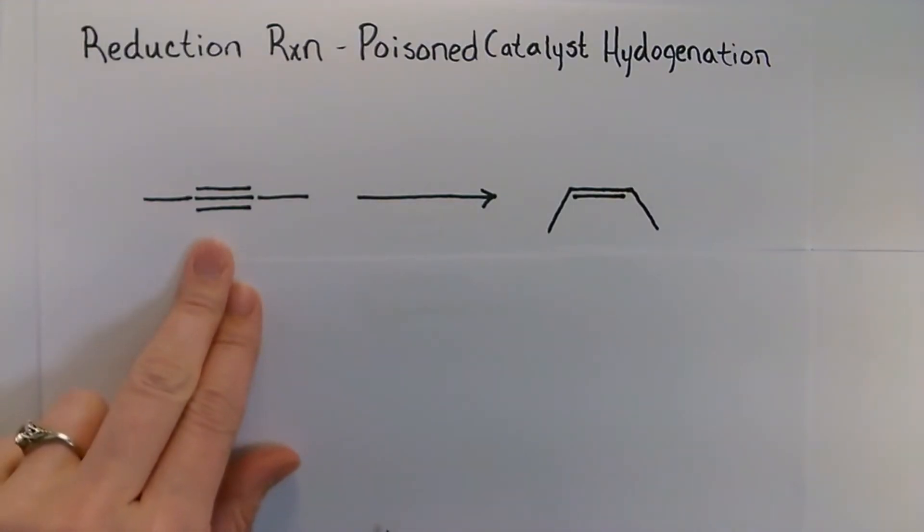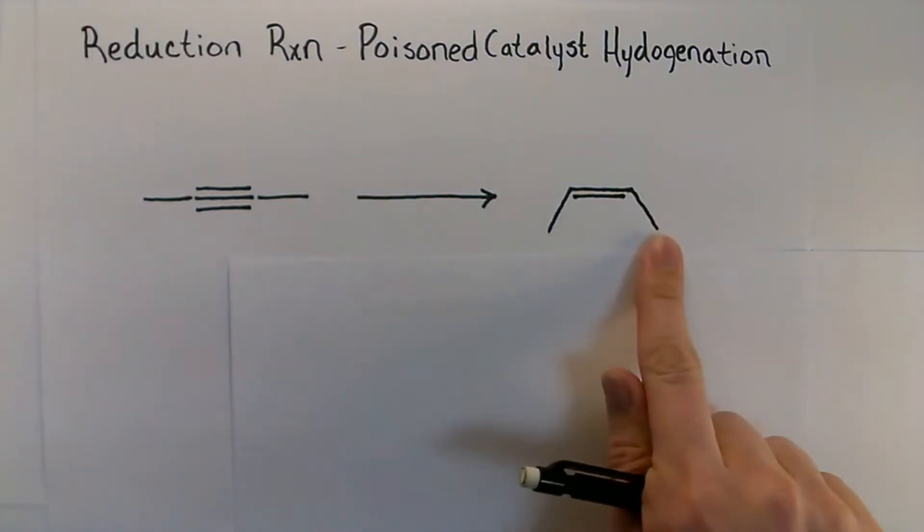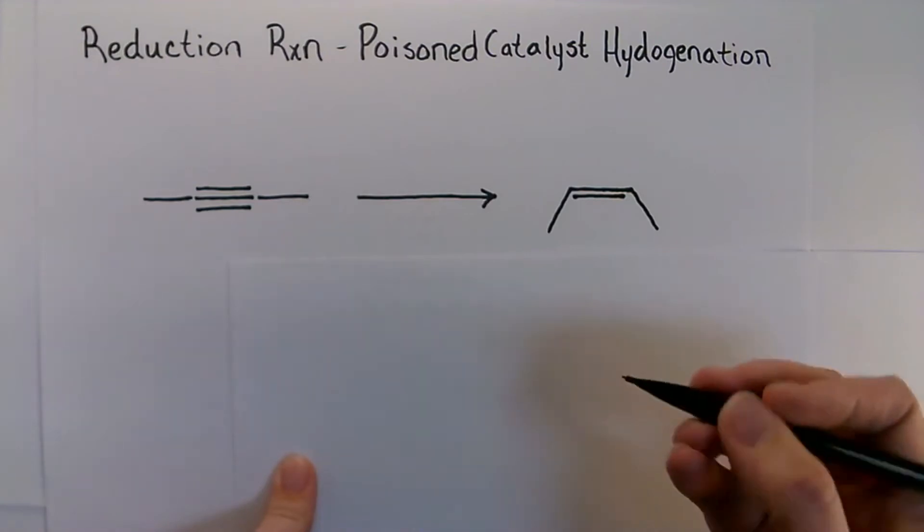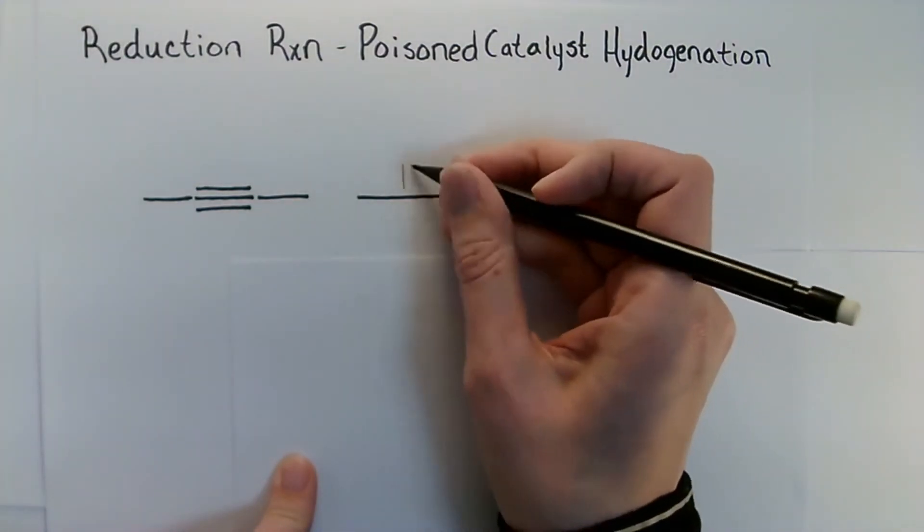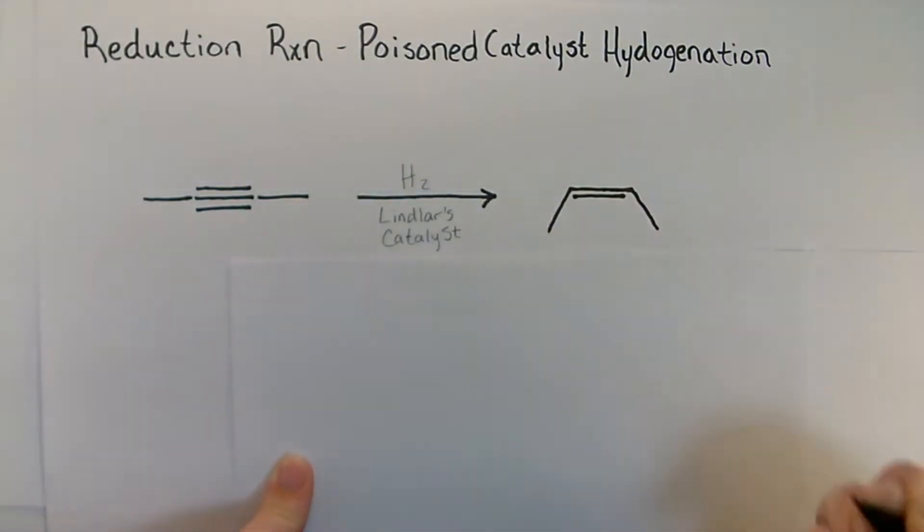Here we're going to do a reduction reaction with an internal alkyne and we're going to use a poisoned catalyst in order to get to a cis alkene. With this we're going to use hydrogen gas and Lindlar's catalyst.